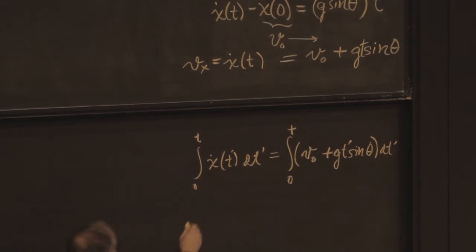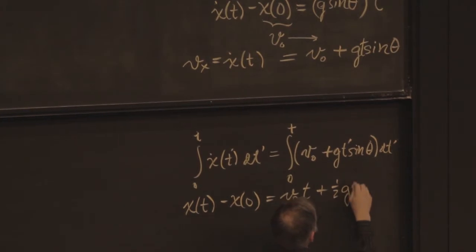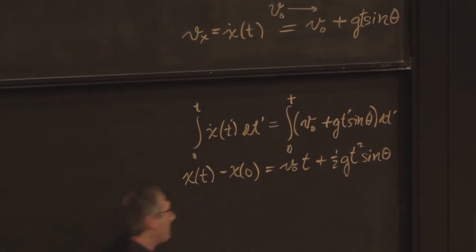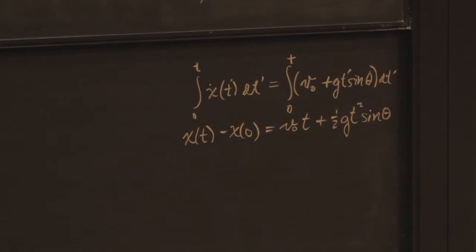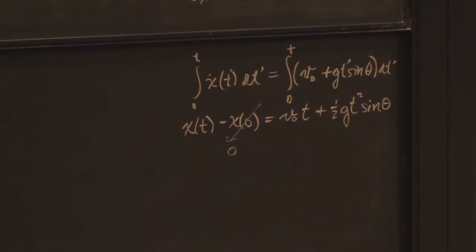So I can integrate again. And I get position x at t minus x at 0 is equal to v0 t plus 1 half g t squared sine theta. Agreed? We all knew this. So let me just pick that to be 0. It's a choice that I can make about where I want to start the coordinate x. And I'll start it from the top when it's at rest.